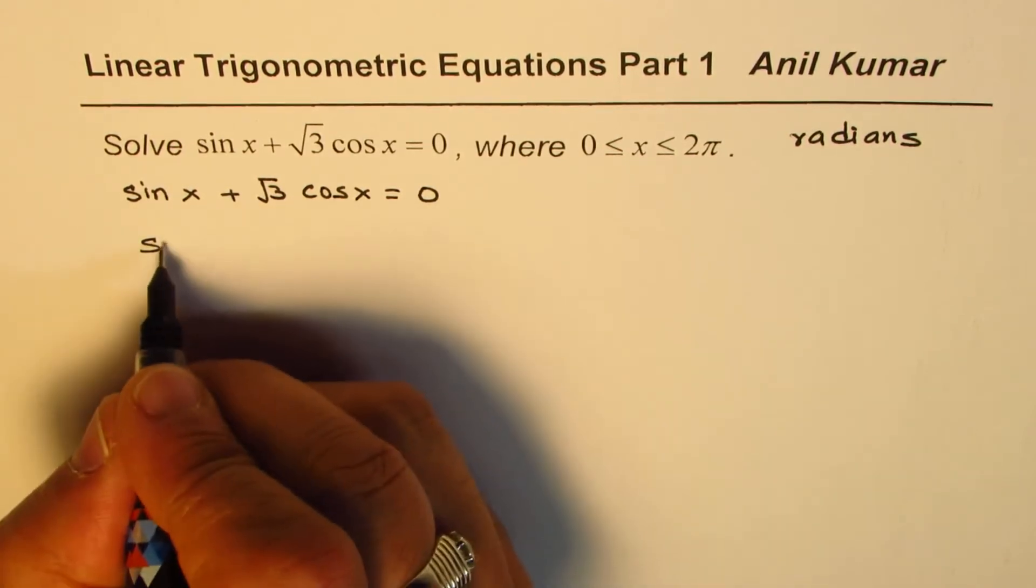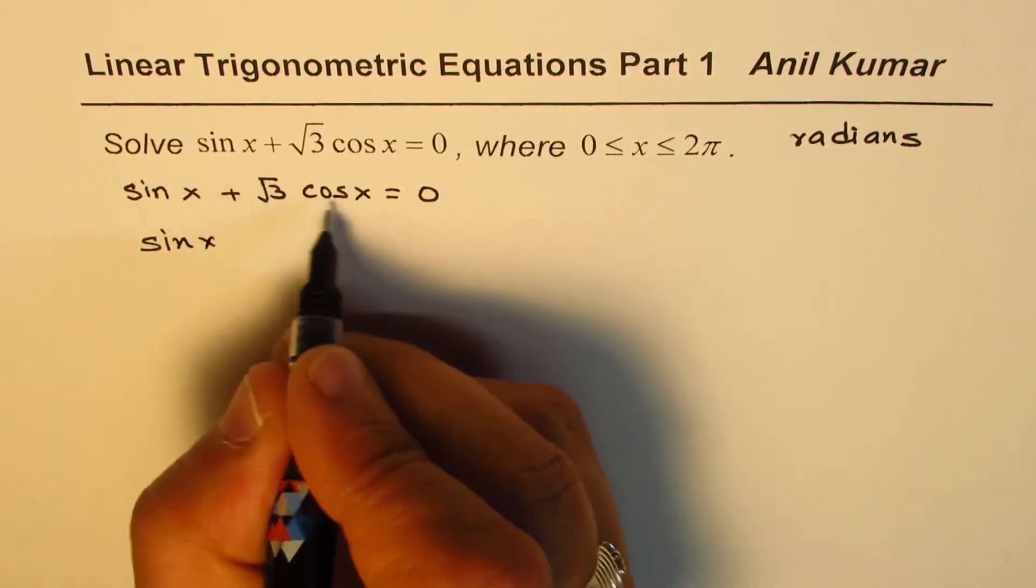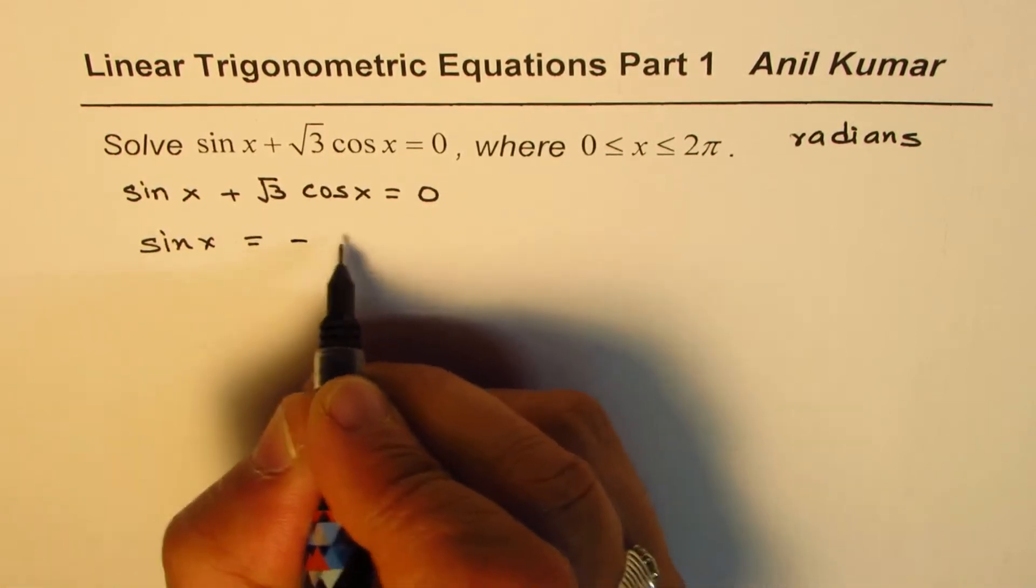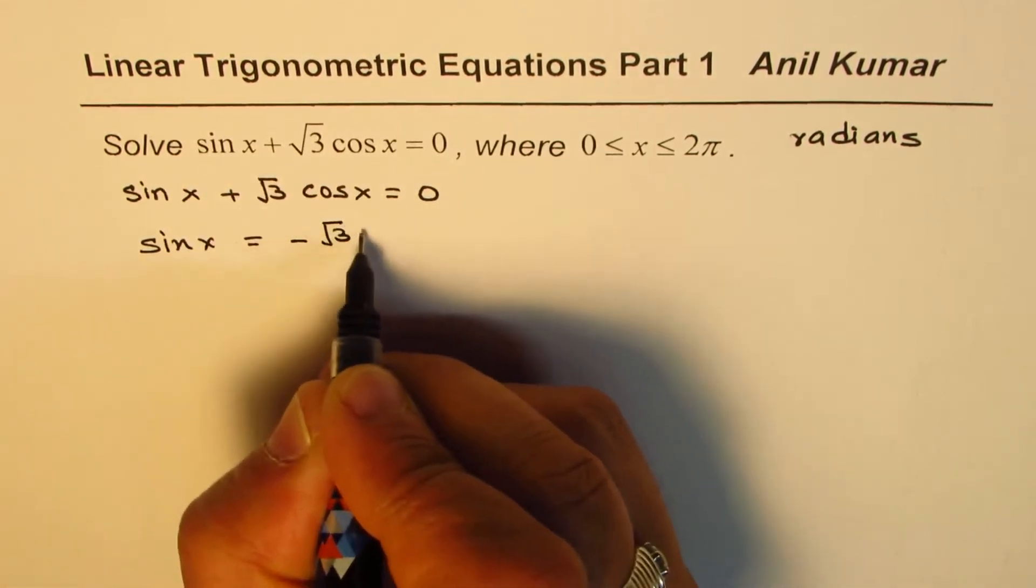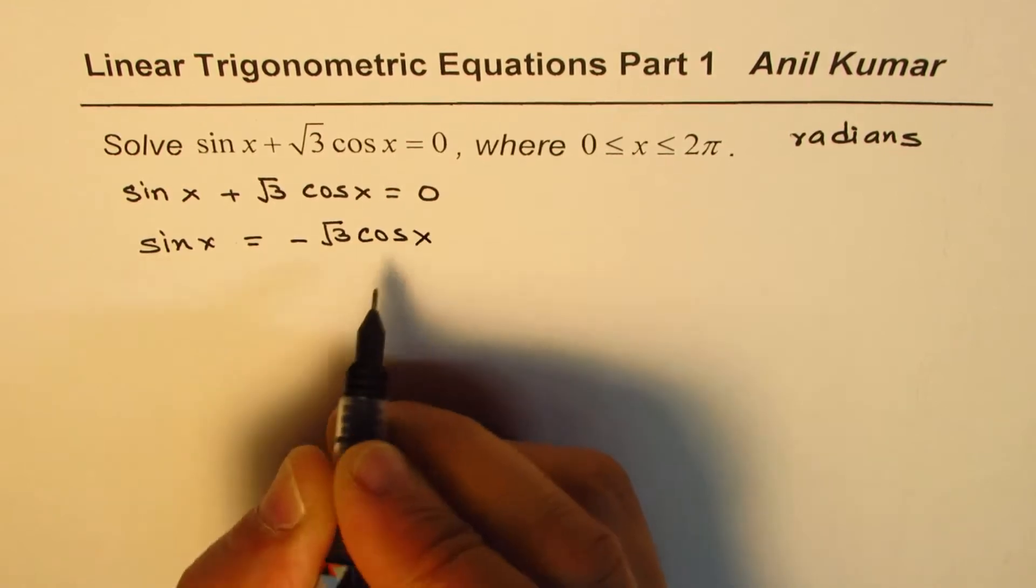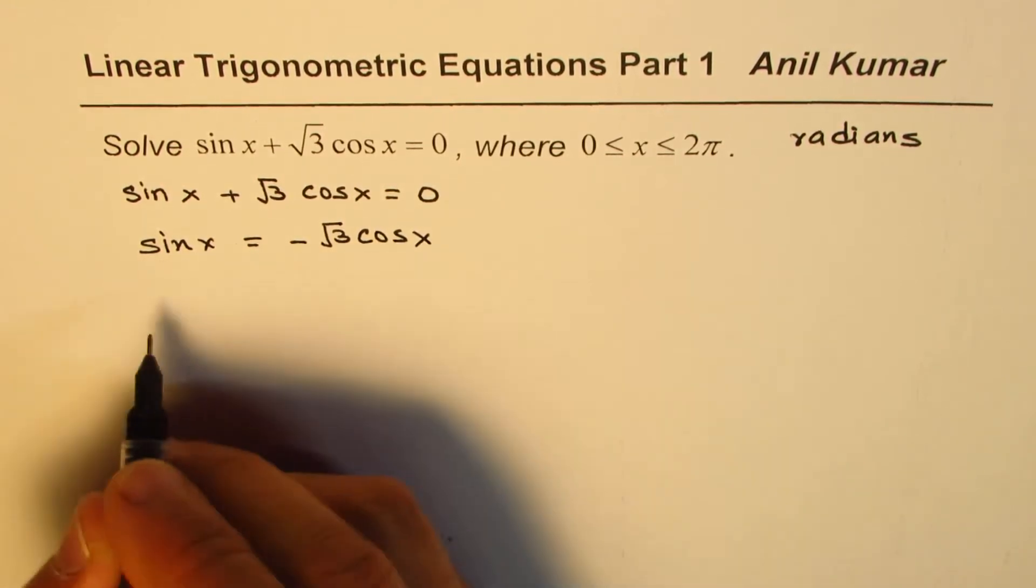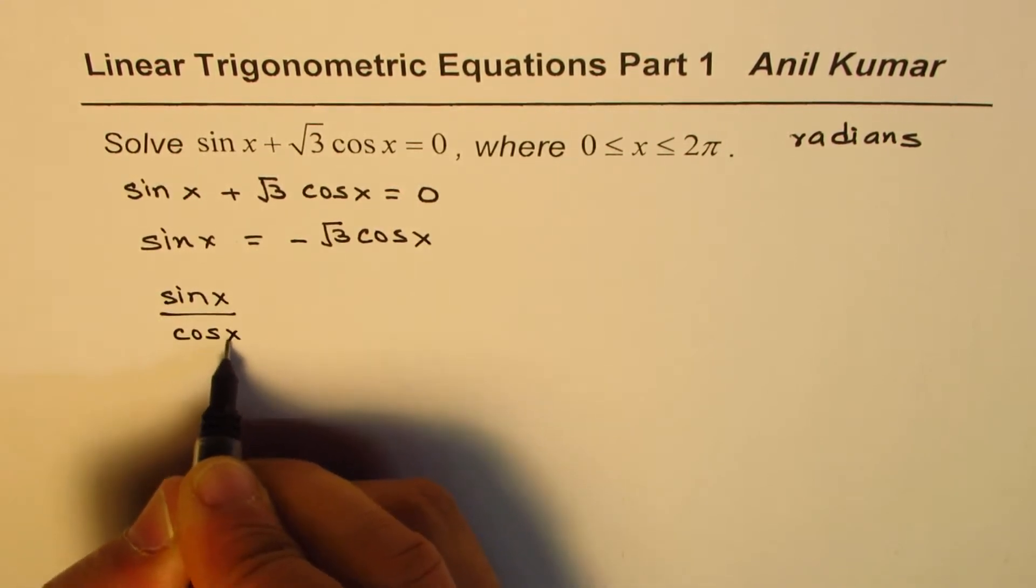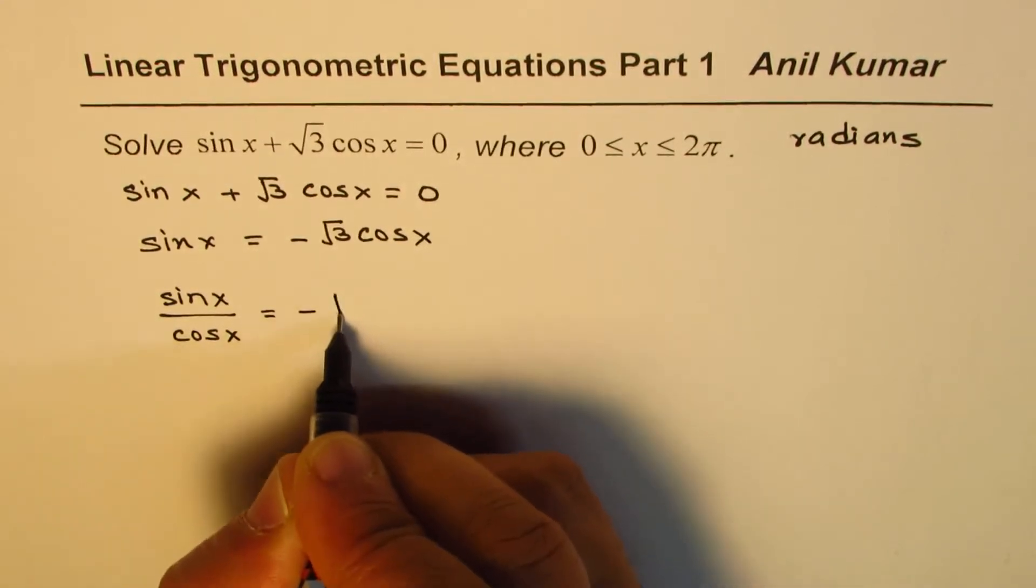We could take this term on the right side, or take away square root 3 cos x from both sides. So we get sin x equals minus square root 3 cos x. Now we can divide by cos x on both sides. So we get sin x divided by cos x equal to minus square root 3.